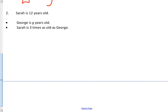So I'm going to add in the question here because it was never listed. So I'm going to say Sarah is 12 years old. George is G years old. Sarah is three times as old as George. And we want to know how old is George.